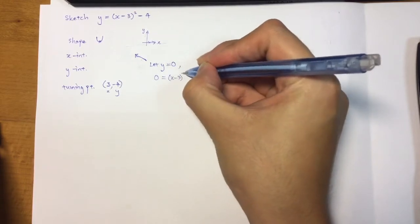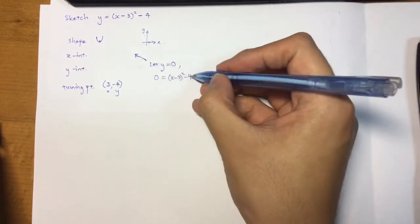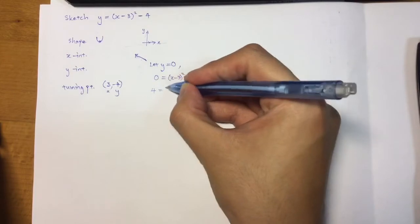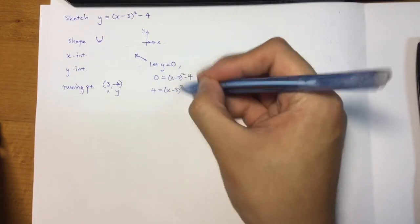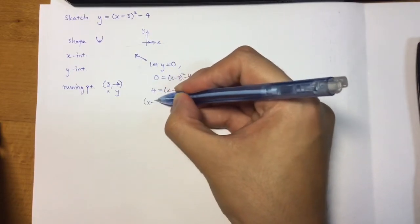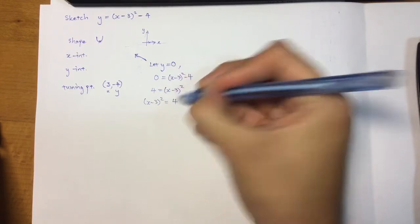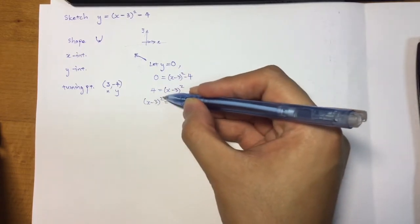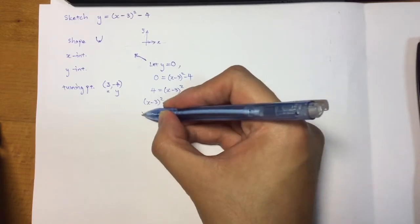I have this. I'm going to bring the minus 4 over and get this. This is a solving equation part, a quadratic equation in fact. And I want to get rid of the squares, so square root both sides.